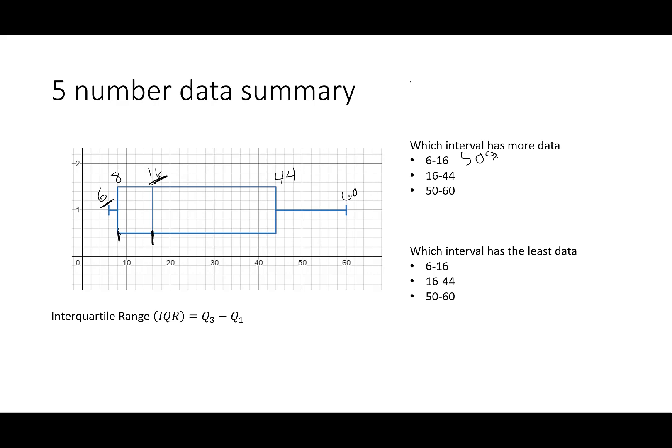So that's right, 50%. Then from 16 to 44, well, that's Q2 to Q3. That's only 25% of the data. And then 50 to 60, 50 is inside this last quartile to 60. I know this is less than 25%. So what I can tell you is 50% of the data, that is my most between six and 16.